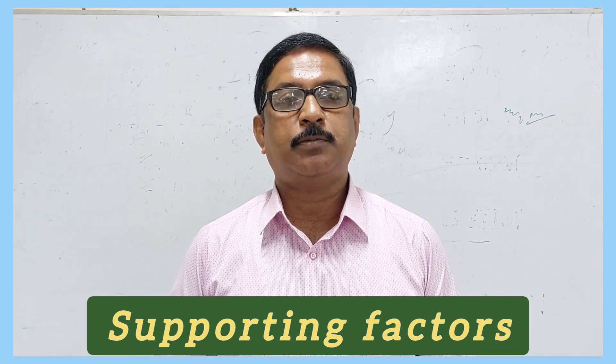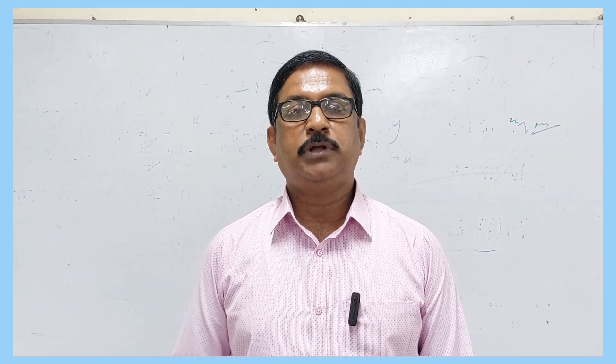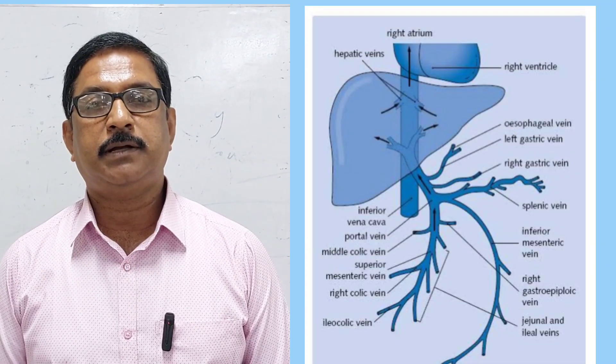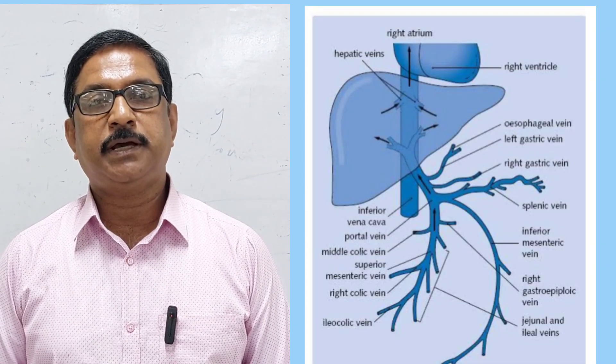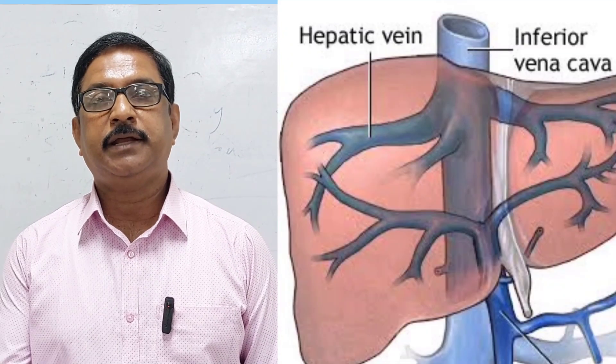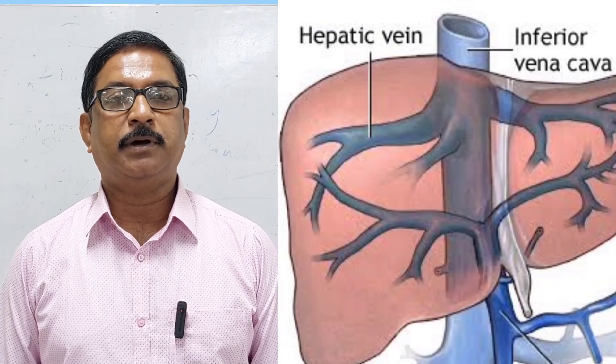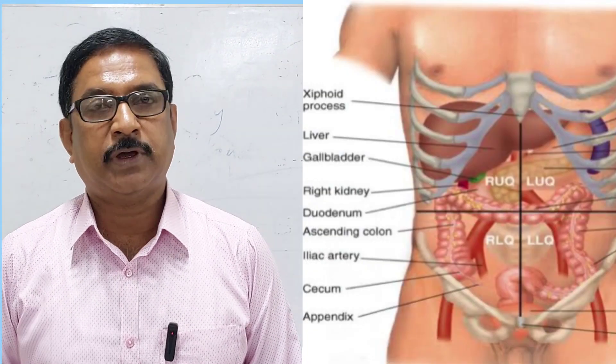The first — and most important — supporting factor is the hepatic veins draining into the inferior vena cava. The hepatic veins are multiple in number; they pierce the floor of the inferior vena cava and then open into it. This is the most important supporting factor.